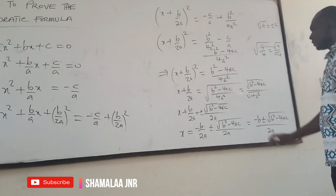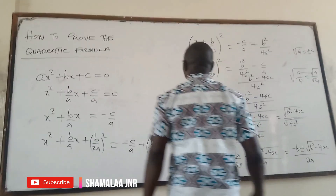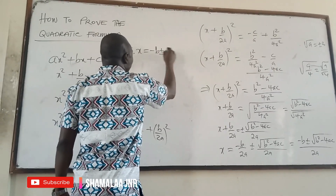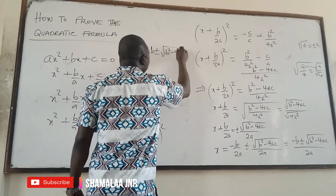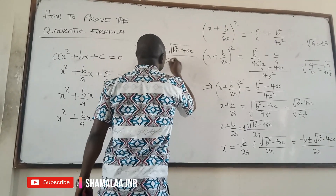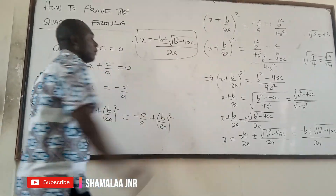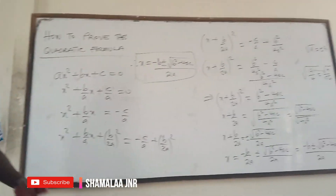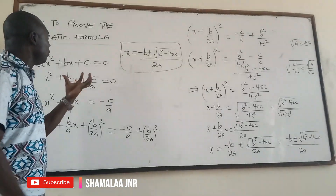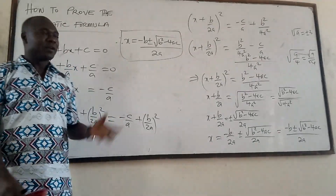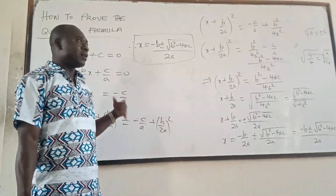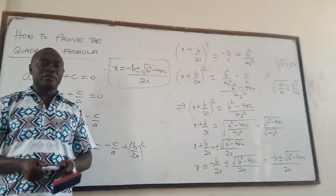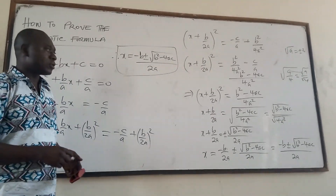So therefore, x equals negative b plus or minus square root of b² minus 4ac, all over 2a. This is the general quadratic formula — back in school we used to call it the almighty formula. This is how to prove the general quadratic formula, and as I have said, this formula can be used to solve all quadratic equations. Thank you very much for your attention. For more videos, subscribe to my YouTube channel.